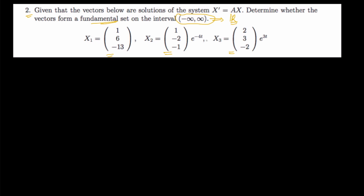Recalling from past videos, for the case where you have two functions and want to check whether they are fundamental, all you need to do is take the Wronskian. If the Wronskian value is zero, then the two functions are linearly dependent. If it is not zero, then they are linearly independent. The same applies here for three column vectors that are solutions of a homogeneous system — we check the Wronskian.